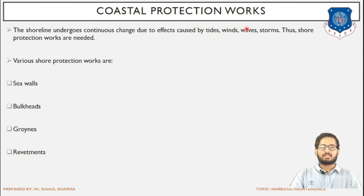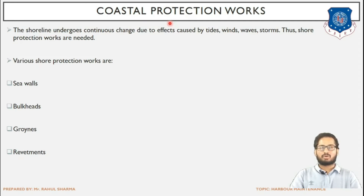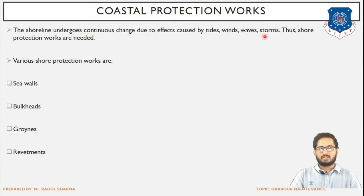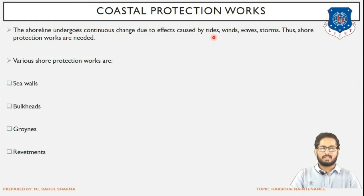The next topic is coastal protection works. This topic deals with which various structures can be constructed for the protection of the coast and beach. These are the various structures which will aid in maintaining the profile and layout of the coast and make sure that no erosion of the coast is taking place. The shoreline undergoes continuous change due to the effect of tides and waves of storms, so shore protection works are needed.